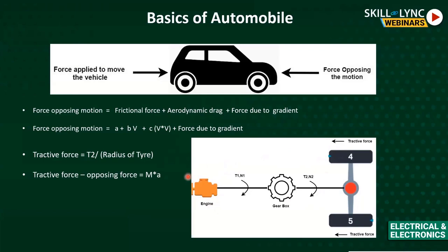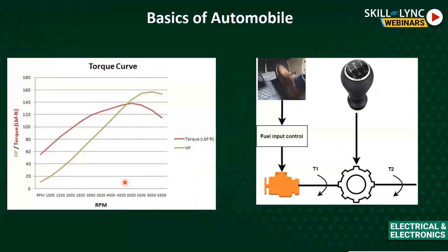Looking at the diagram: an internal combustion engine outputs torque. Based on tractive and opposing forces there is acceleration or deceleration, operating at some RPM N1. The gearbox converts T1 and N1 into T2 and N2 based on the gear ratio, allowing efficient use of the engine while extracting the required tractive force through different permutations and combinations of gear ratios.